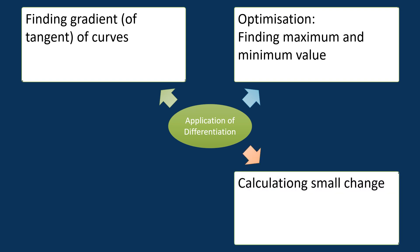Calculating small changes. In many fields, including physics, chemistry, and engineering, small changes can be significant. Differentiation is used to calculate these small changes. For example, if you have a function that represents the volume of a sphere as a function of its radius, you can use differentiation to calculate how much the volume changes if you increase the radius by a small amount.